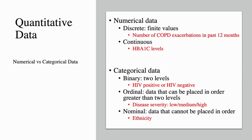Quantitative data can be either numerical or categorical. Numerical data can be discrete with finite values, such as the number of COPD exacerbations in the past 12 months, or continuous, such as HbA1c levels. Categorical data can be binary with two levels such as HIV positive or HIV negative, ordinal with more than two levels that can be placed in order such as disease severity (low, medium, high), or nominal data that cannot be placed in an order, such as ethnicity.